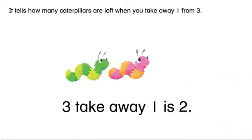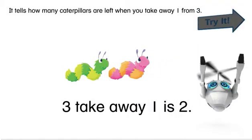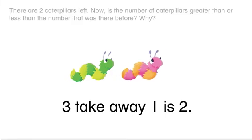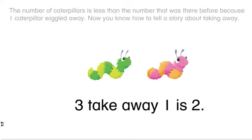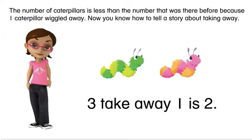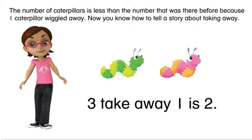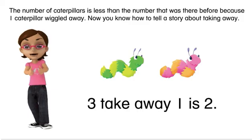It tells how many caterpillars are left when you take away one from three — there are two caterpillars left. Now, is the number of caterpillars greater than or less than the number that was there before? The number of caterpillars is less than before because one caterpillar wiggled away. Now you know how to tell a story about taking away. Great job!